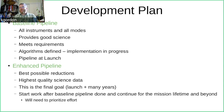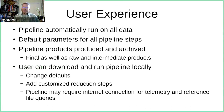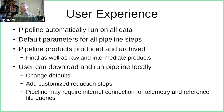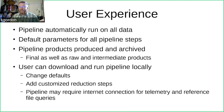For user experience, the pipeline automatically runs on all data. There are default parameters for all the pipeline steps, and all data goes through the pipeline within a couple of days of it hitting the ground and into the archive. Pipeline products are produced and archived — final as well as raw and intermediate products that we think are interesting for the community. You can also download and run the pipeline locally, change the defaults, and add your own customized reduction steps.